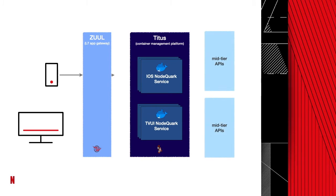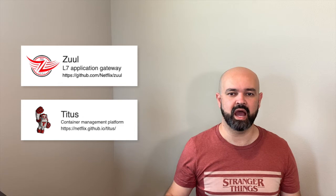That early work evolved into our current serverless Node.js platform called Node Quark. A Node Quark service lives in a container which is deployed into our container management platform named Titus, and sits behind our Level 7 application gateway named Zul, which is responsible for authenticating, validating, and routing requests from the diverse clients to the corresponding Node Quark service. Upon receiving a request, the Node Quark service will make one or more requests to the mid-tier APIs and format the responses to send back to the client. Both Zul and Titus are Netflix open-source projects — I suggest you check them out on GitHub.